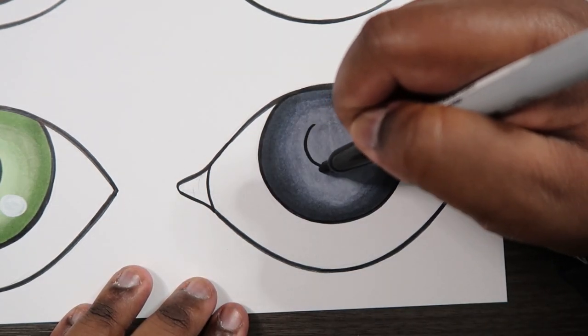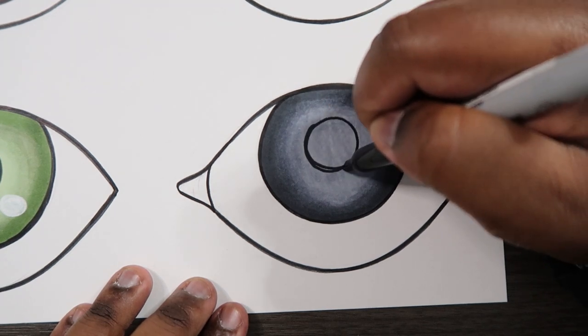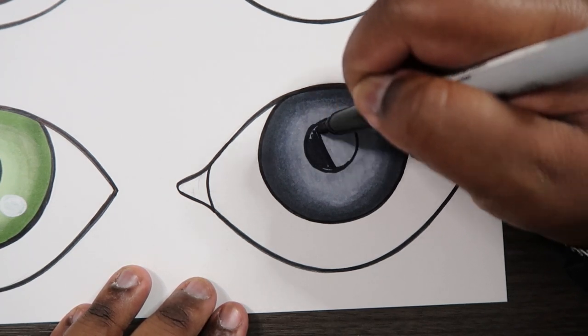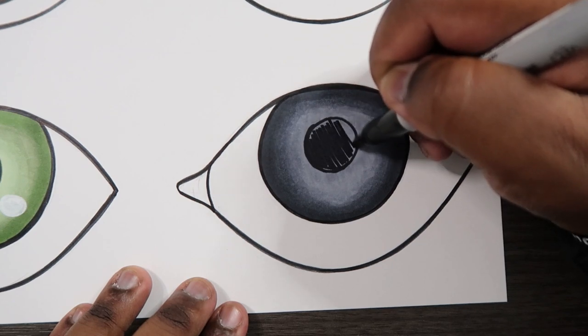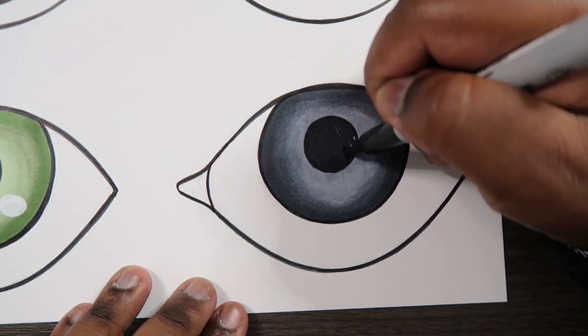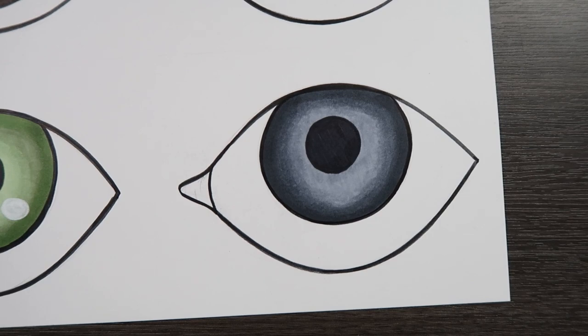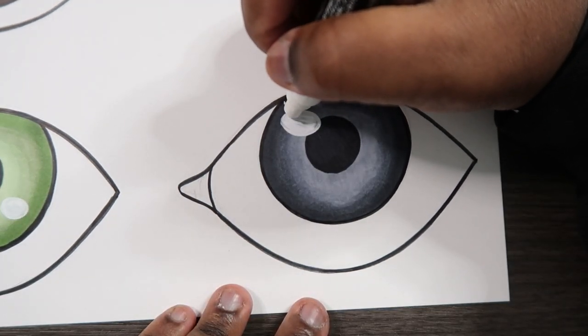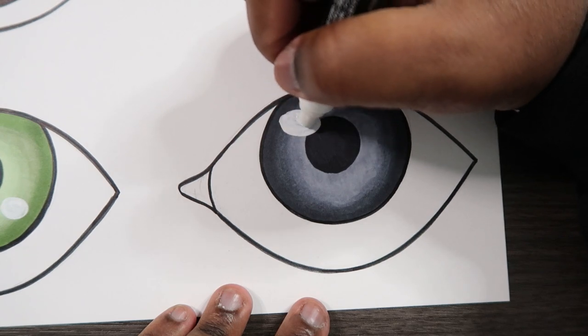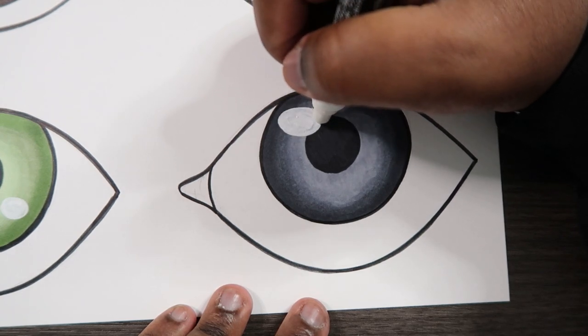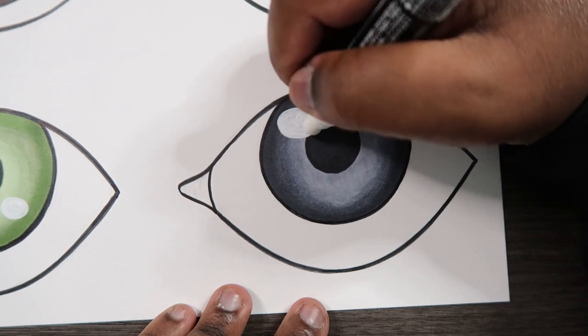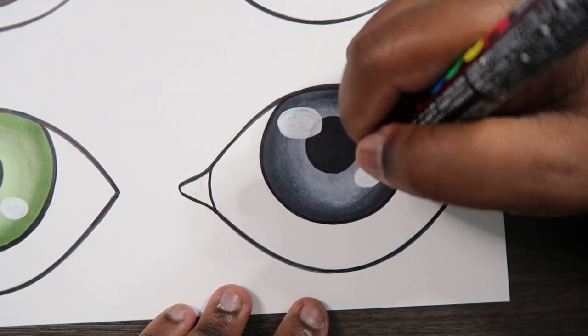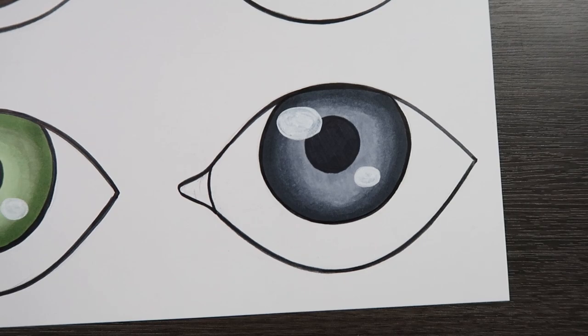So let's draw in our pupil. And then our paint pen to add some highlights. And there we go.